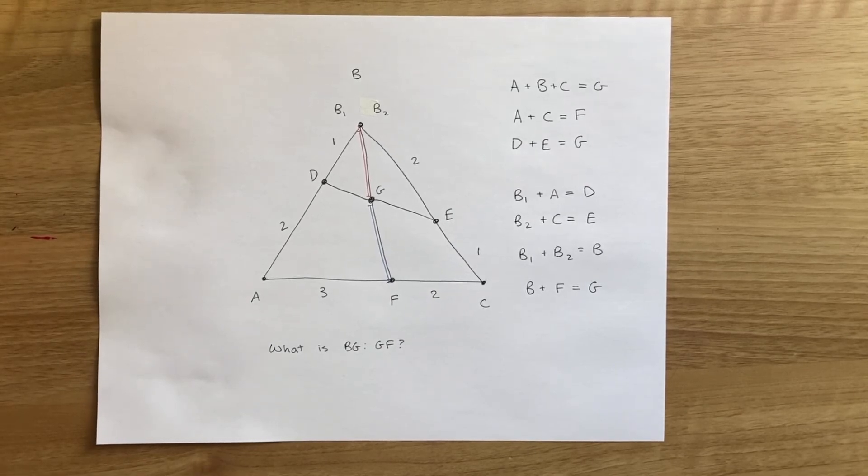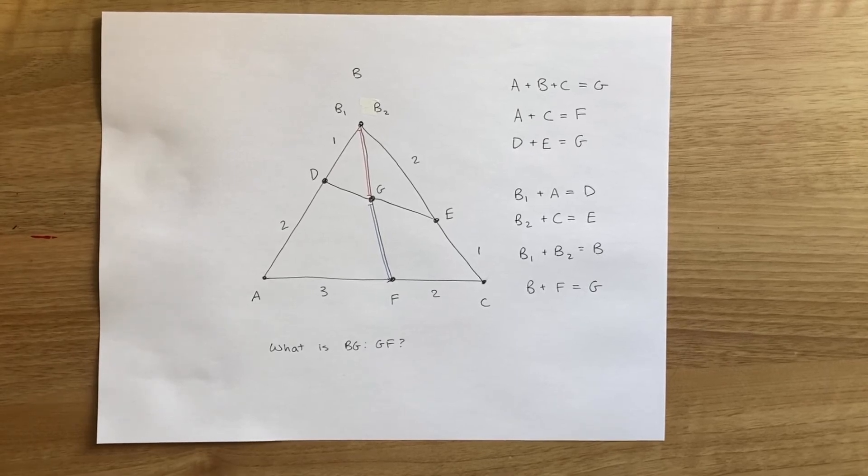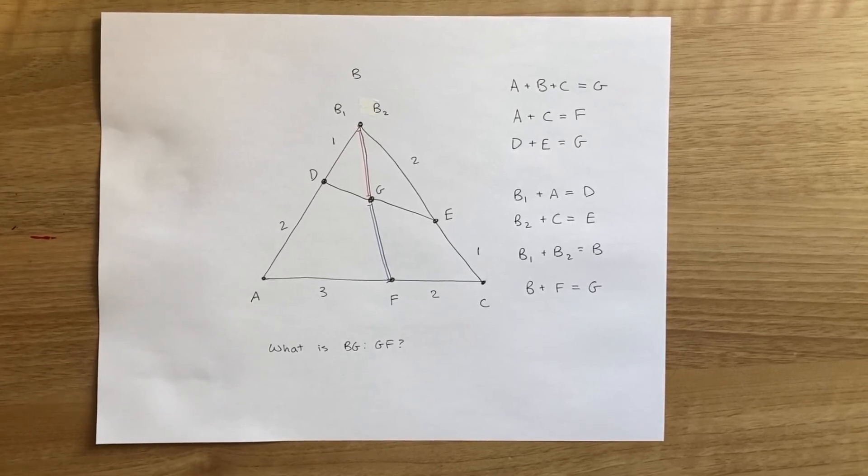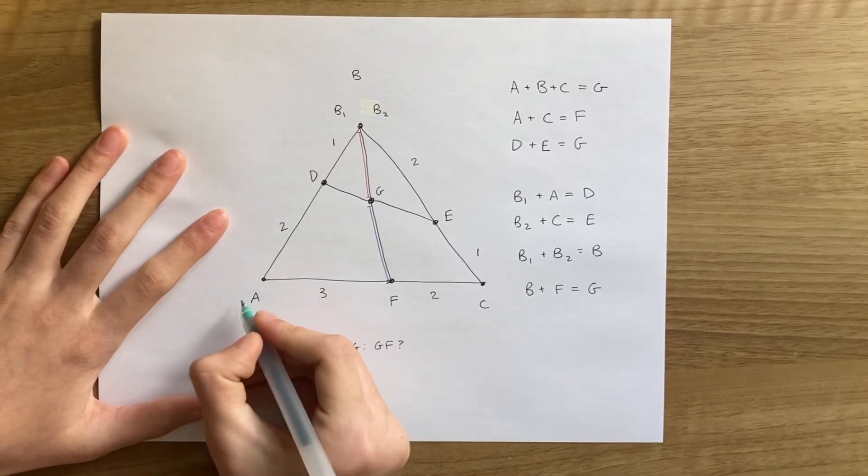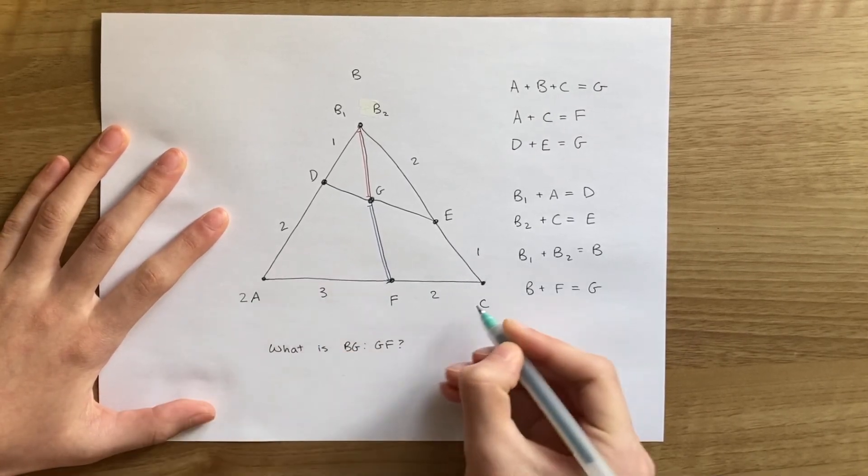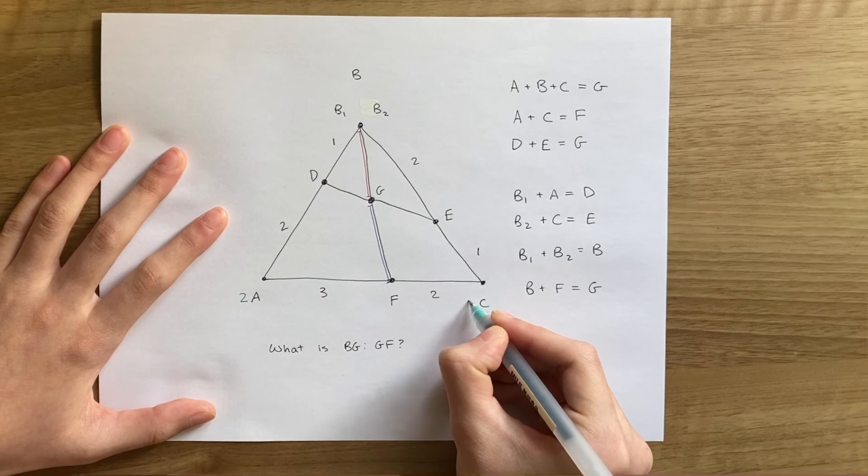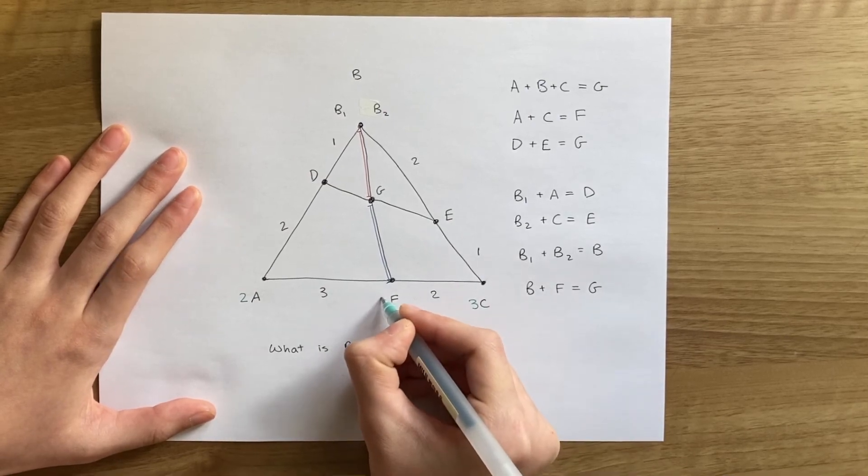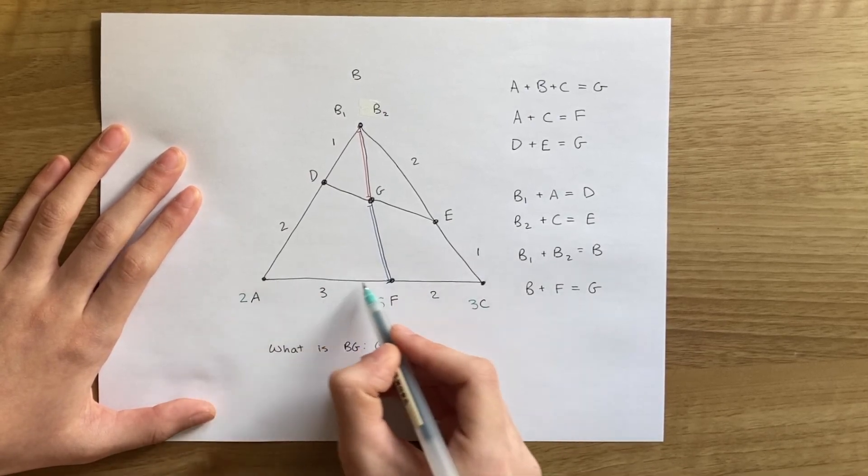Now we can assign some masses using the ratios we're given. The first mass is arbitrary as long as the ratios are maintained. So let's say A has a mass of 2. Since we have that 3 to 2 ratio, C has a mass of 3, and so F has a mass of 5.